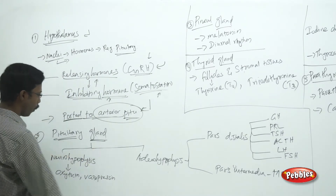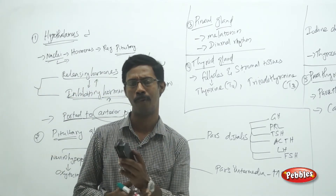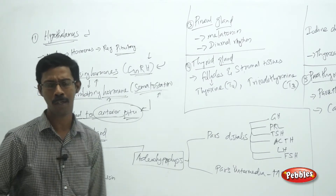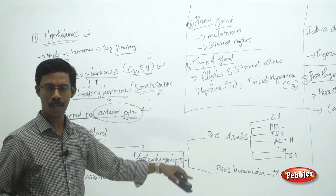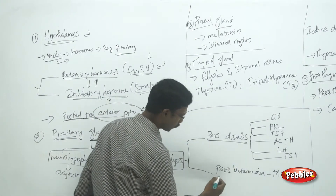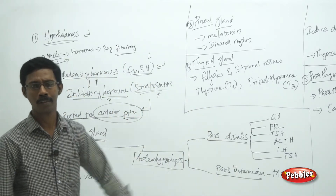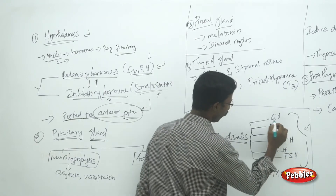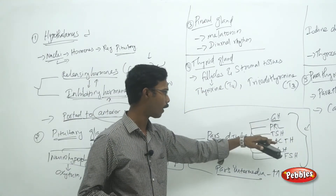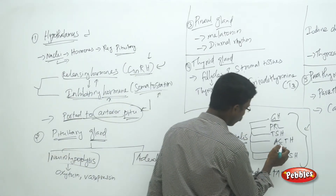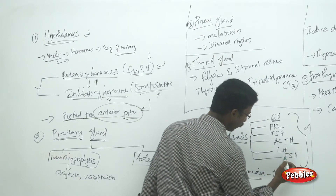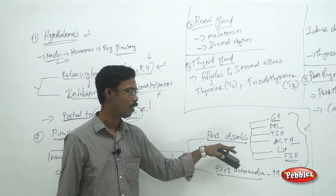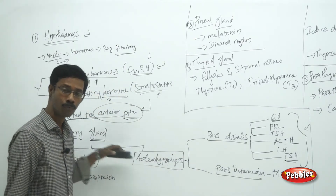The pituitary gland is one of the major endocrine glands. It is divided into two major structures: neurohypophysis and adenohypophysis. The adenohypophysis has two regions: pars distalis and pars intermedia. From the pars distalis, several major hormones are secreted: growth hormone (GH), prolactin, thyroid-stimulating hormone (TSH), adrenocorticotropic hormone (ACTH), luteinizing hormone (LH), and follicle-stimulating hormone (FSH).